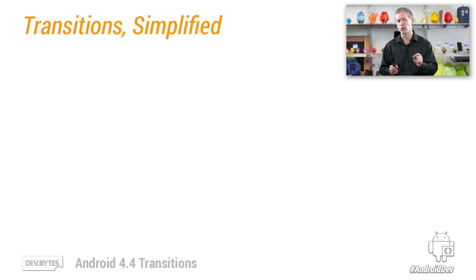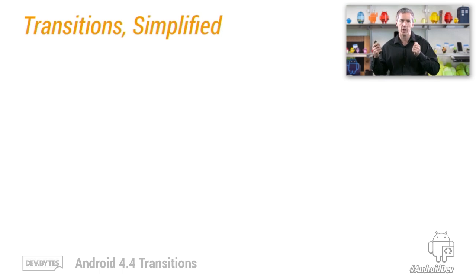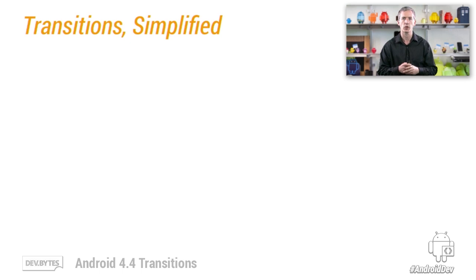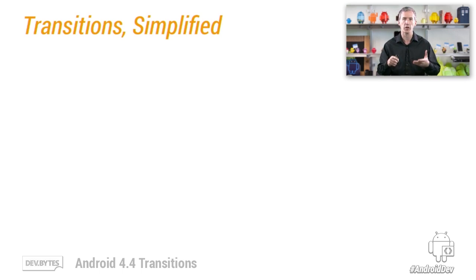Before we get to transitions simplified, there's one other thing — the idea of a TransitionManager. You'll usually use this for a one-off thing where you say, TransitionManager, I want to go to this scene and use my custom transition here. But it can also keep a whole graph of information about all the transition combinations you want for all the scene combinations in your application.